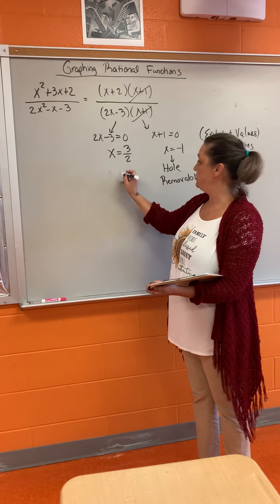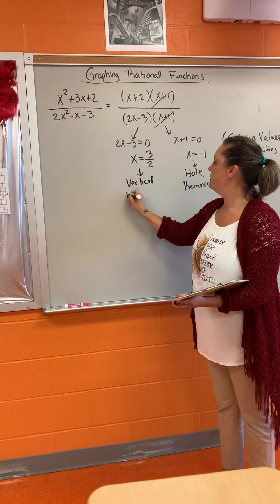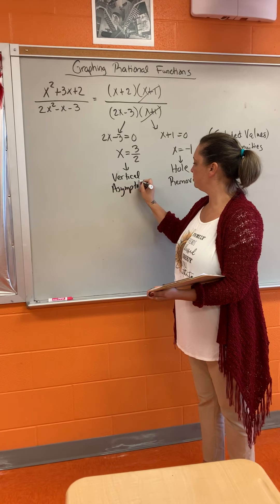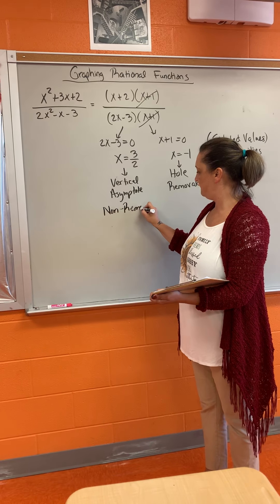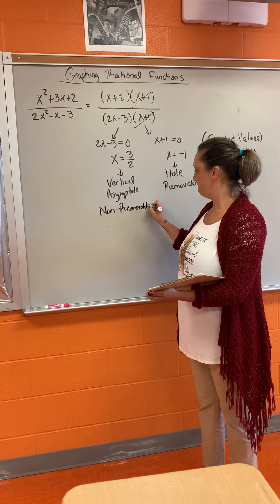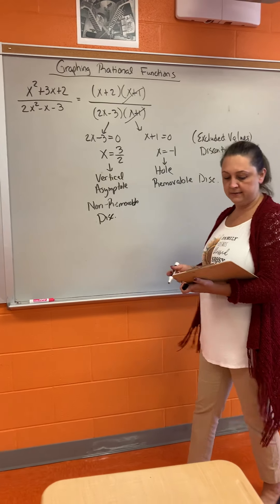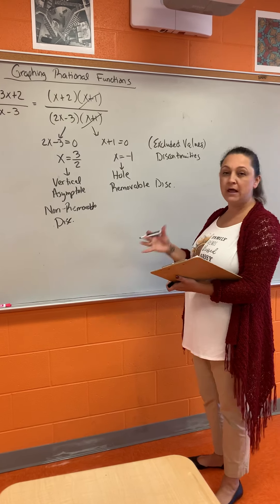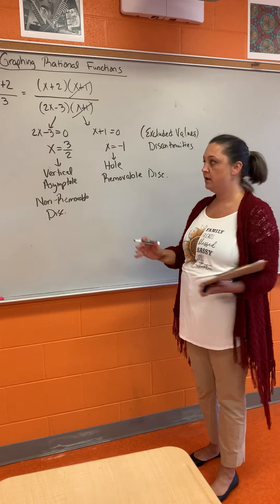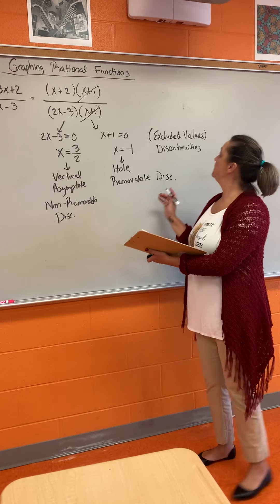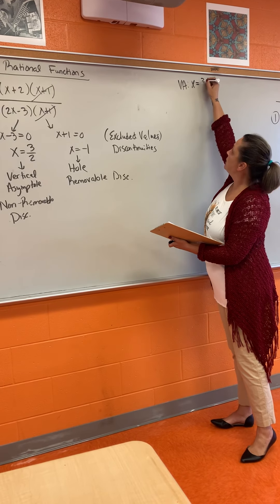A non-removable discontinuity is a vertical asymptote. Now that we have that, we're going to start what I like to call a grocery list — a list of different things we need to build off of. So far, we have a vertical asymptote at x = 3/2.